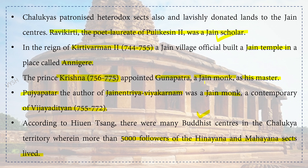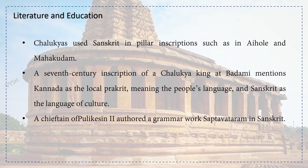Regarding literature and education: the Chalukyas used Sanskrit in pillar inscriptions such as Aihole and Mahakudam. A 7th century inscription of a Chalukyan king at Badami mentions Kannada as local Prakrit — meaning the people's language — and Sanskrit as the language of culture. A chieftain of Pulakeshin II authored a grammar work, Saptavarman, in Sanskrit.